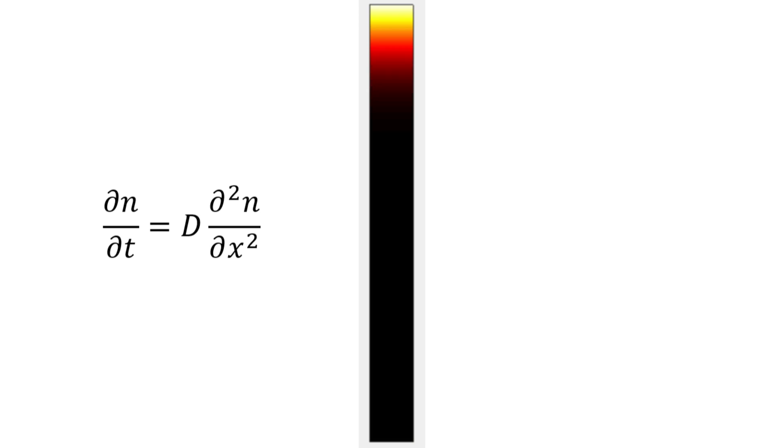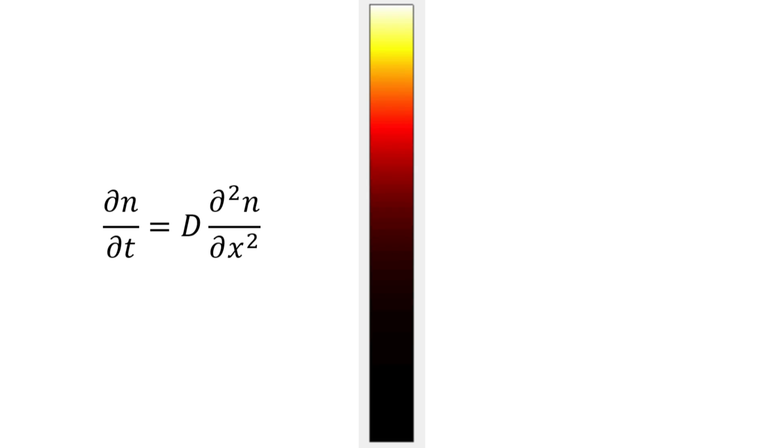We also have a very good physical description for diffusion, the diffusion equation. Solving it shows exactly the same result as in the experiments. Things change rapidly at first and then they slow down.